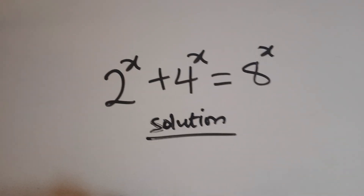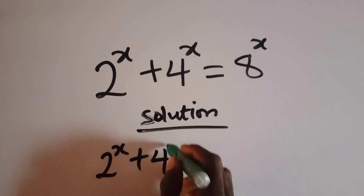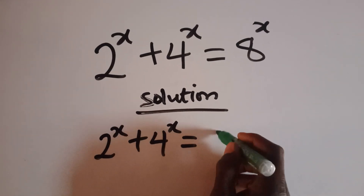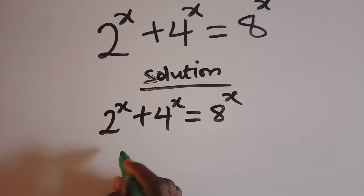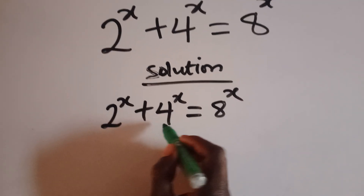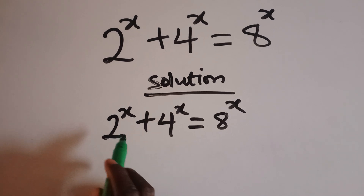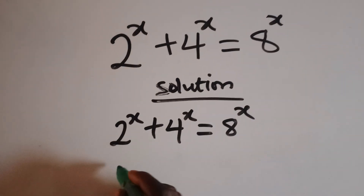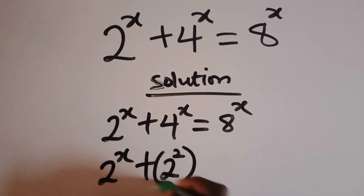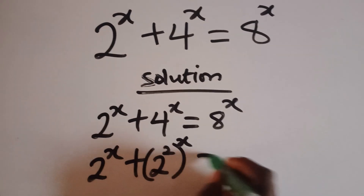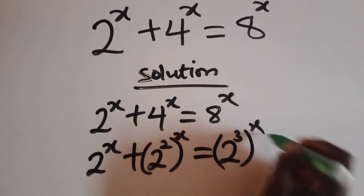We have 2 raised to the power x plus 4 raised to the power x equal to 8 raised to the power x. Let's rewrite 4 raised to the power x and 8 raised to the power x so that they have the same base as 2 raised to the power x. We'll have 2 raised to the power x plus 2 squared, everything raised to the power x, equal to 2 cubed, everything raised to the power x.